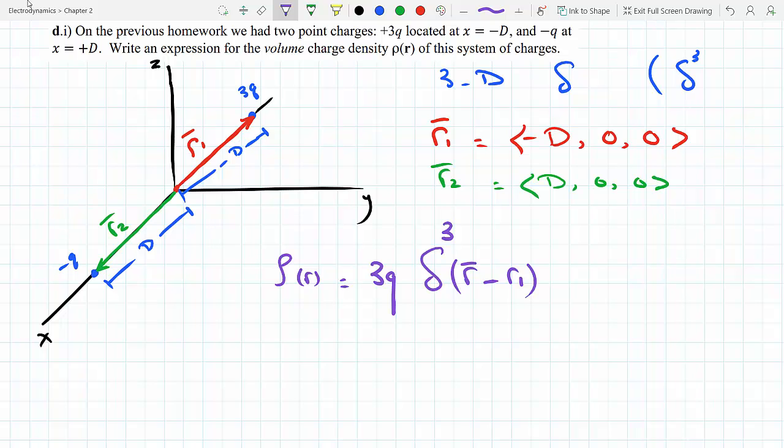If you are at r1, the amount of charge will be 3q because this will pick up the value of the charge at r1. It's going to be 1 times 3q, which is 3q.